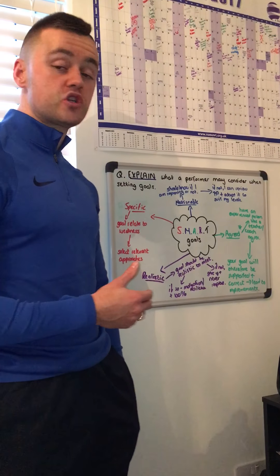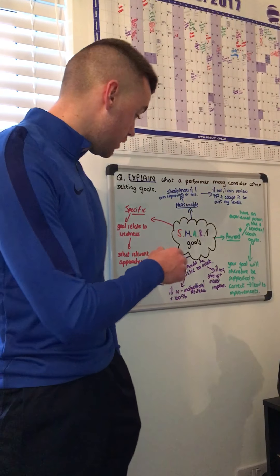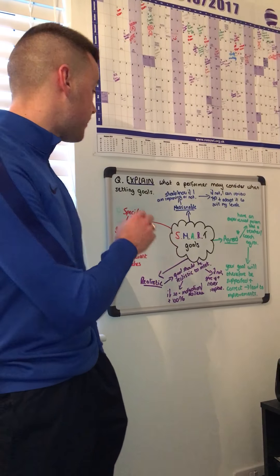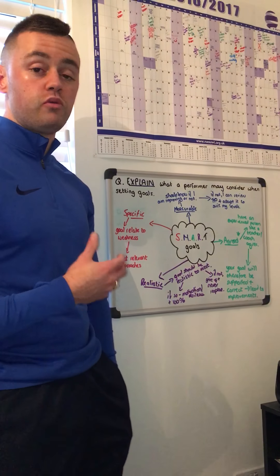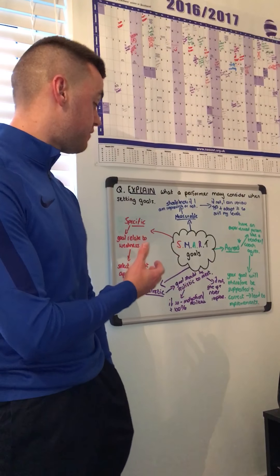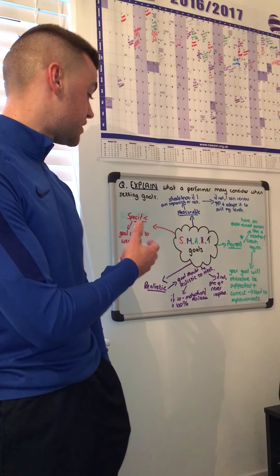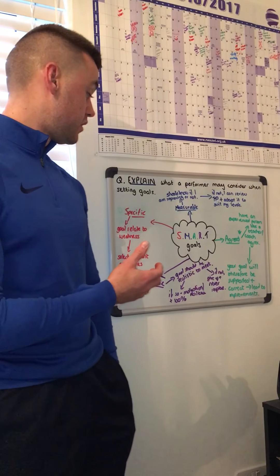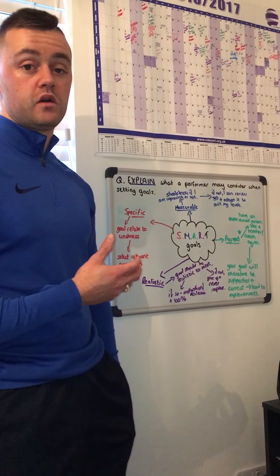After that you move on to the A — Agreed. Again, define it. An agreed goal is one that is agreed by an experienced person like a teacher or a coach. No marks given there, but then we expand on it to get the mark. This means that my goal will therefore be supported by an experienced person and be correct, which can lead to me therefore improving — and that's where you get your mark.